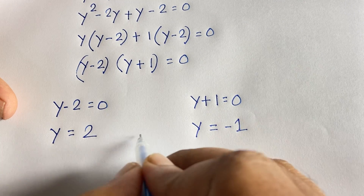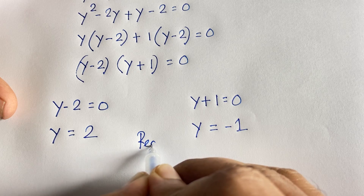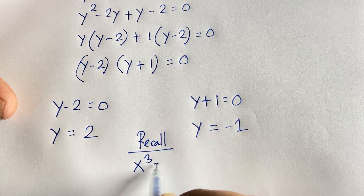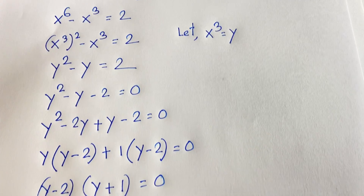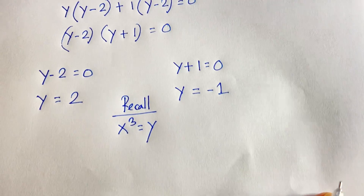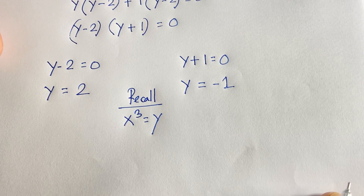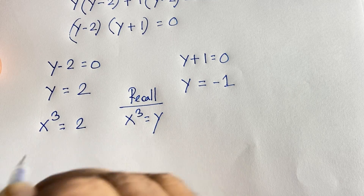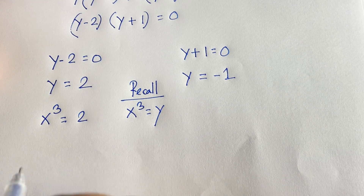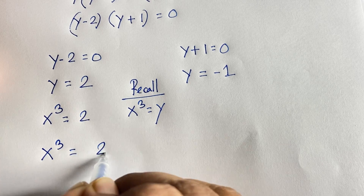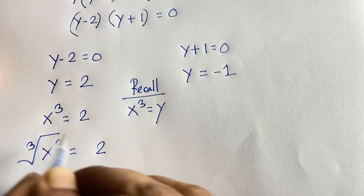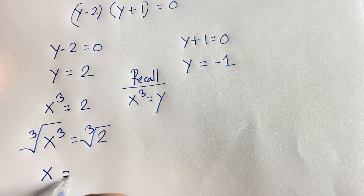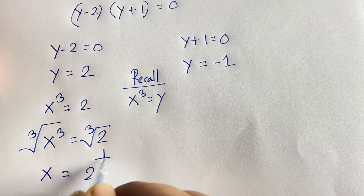Recall that we let x to the power 3 equal y. So in the first case, x to the power 3 is equal to 2. Therefore our answer for this case is x is equal to 2 to the power 1 over 3.